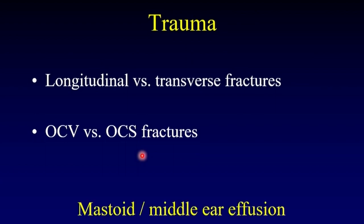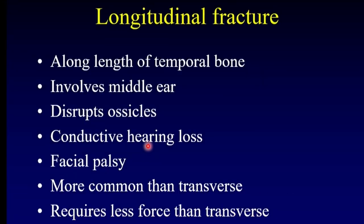I want to emphasize once again this concept of using the mastoid effusion to your benefit. In the trauma setting, if you see material within the mastoid and middle ear, do not assume that is effusion from infection. In a trauma setting, that is almost always going to be an indicator of a temporal bone fracture. If all you have is a head CT and you see that effusion, get the dedicated temporal bone CT because there's probably going to be a fracture that you won't detect on those thick head CT images.